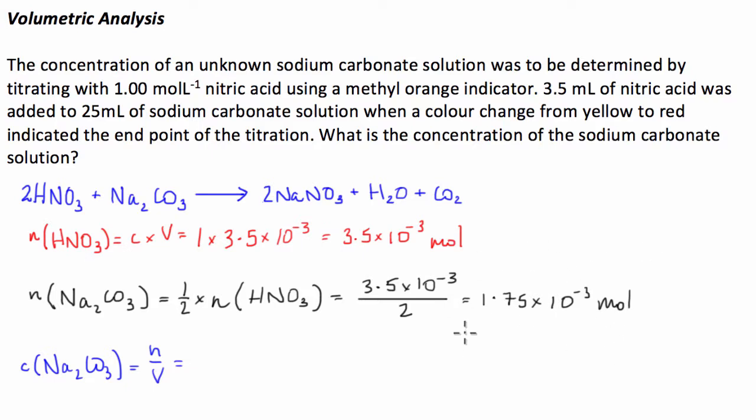× 10^-3 divided by the volume, which is 25 mL or 0.025 liters. That gives us a final concentration of 7.0 × 10^-2 mol/L of Na2CO3.